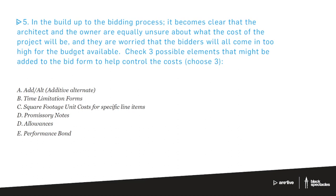Check three possible elements that might be added to the bid form to help control the costs. So what could you put in the bid form to make your life better for when all the bids come in too high that you have the ability to carve the project out of it? And the answers are going to be, we have an answer for A is going to be a correct answer. C is a correct answer. D is a correct answer. Time limitation forms is, that's a made up thing, but it's kind of an interesting one. Promissory notes is something completely different, financial, but completely different. Performance bond, I'll come back to in just a second. That one is actually potentially a pretty good answer, but I think allowances in this setup is actually a little bit better of an answer.